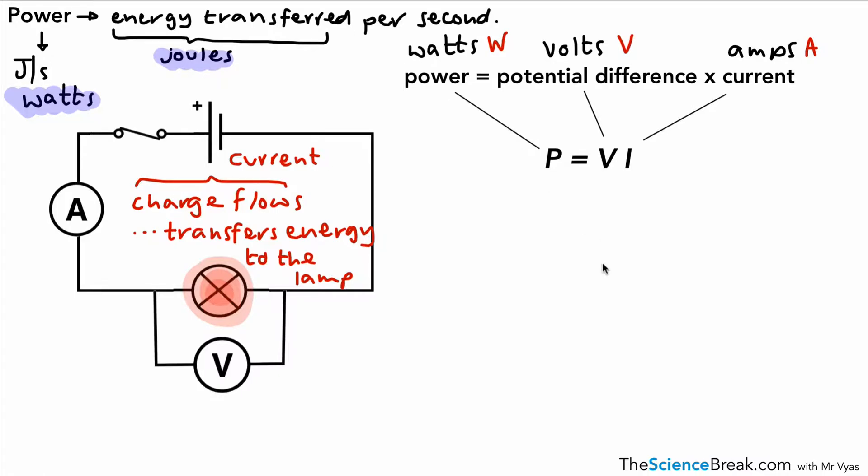Now that's one equation that we need to know, but there is another one. And that goes like this. If we remember that V equals IR and change the V to an IR, we get this equation here. Power is I squared R.